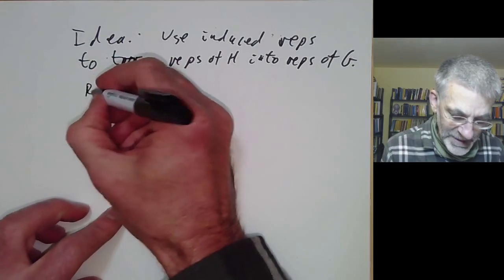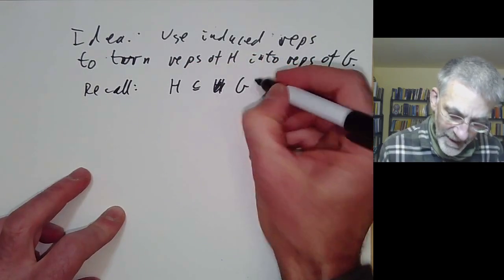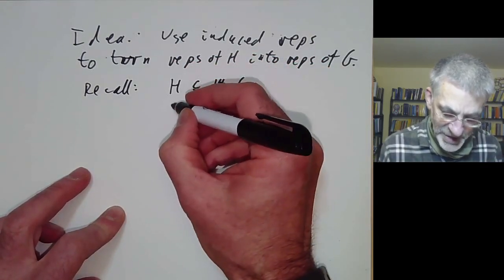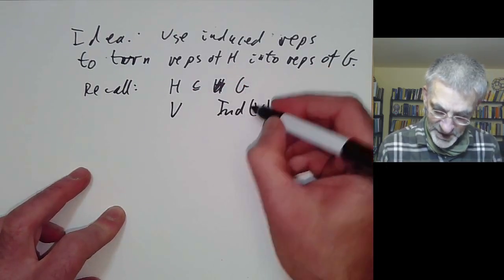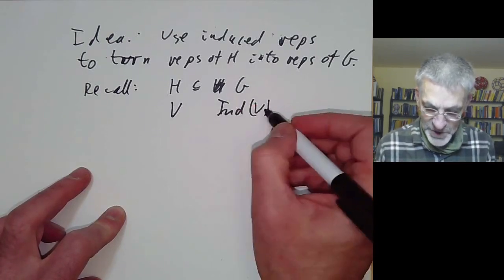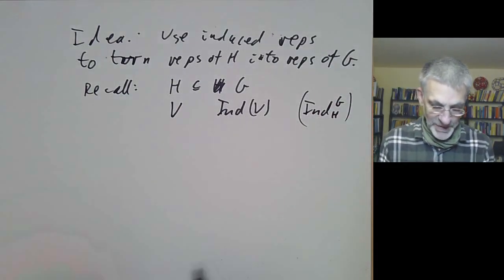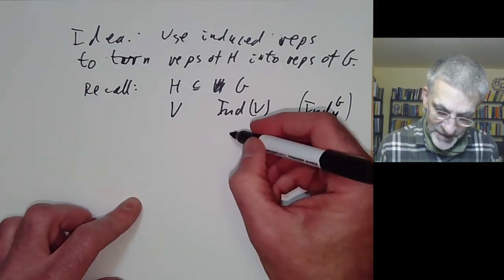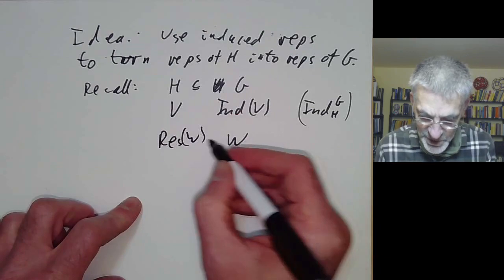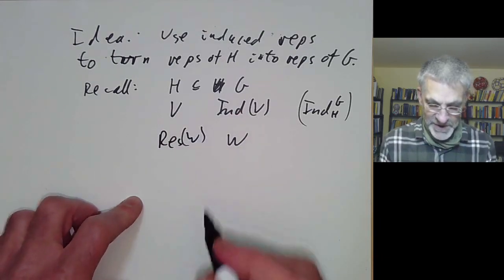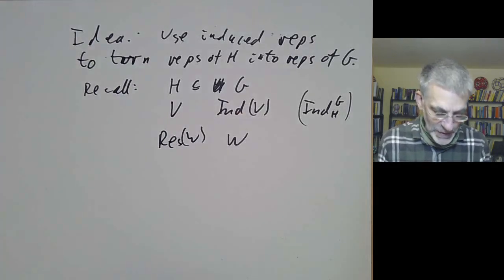We recall that if we have a subgroup H of a group G, and a representation of H, we have an induced representation of G — written ind for the induced representation. Conversely, if we have a representation W of G we can restrict it to H, giving the restricted representation. These two operations, as mentioned in the last lecture, are adjoint.